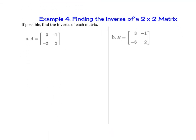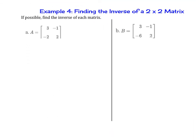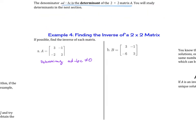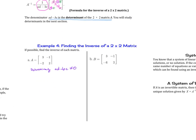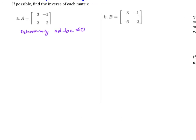So we're going to apply this formula. Find the inverse of a 2 by 2 matrix. If possible, find the inverse of each matrix. The first thing we do is we look at the determinant. We want to make sure a times d minus b times c is not equal to 0. If you look at the formula, you know that can't be because then the denominator would be 0.